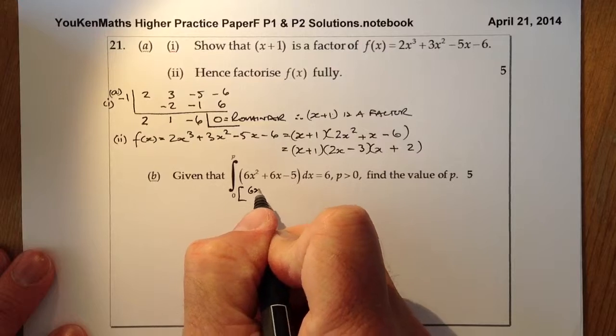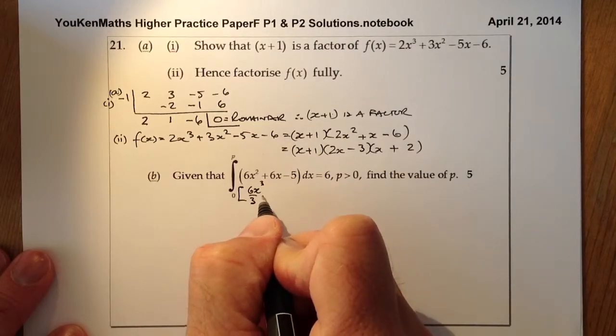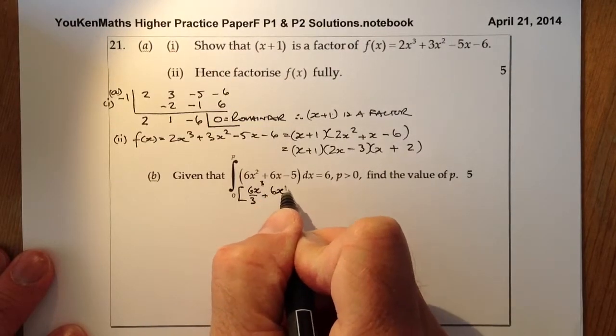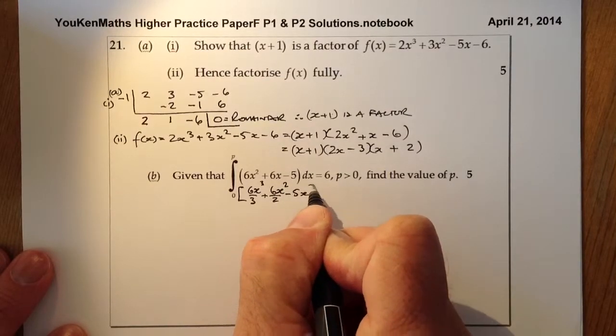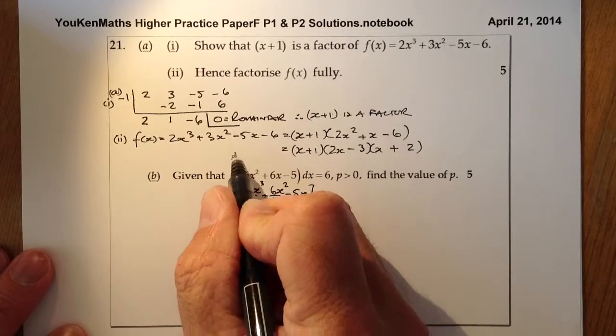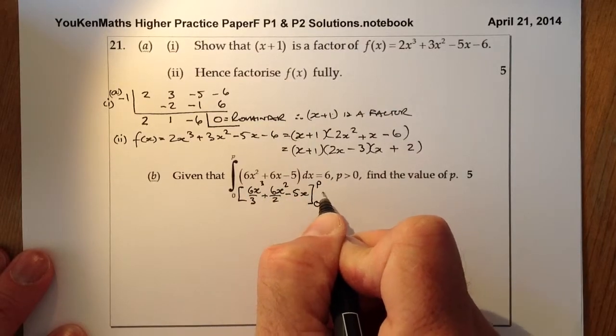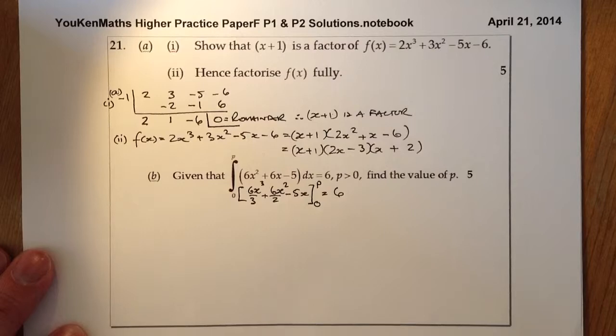I'm going to go for 6x³/3 plus 6x²/2 minus 5x, with limits of integration p and 0. And we know that equals 6.